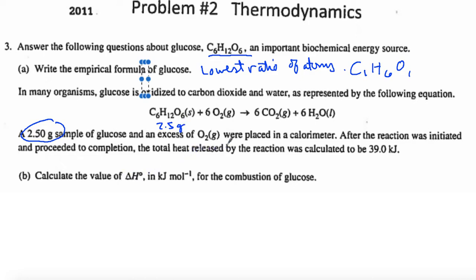It says a 2.5 gram sample of glucose in an excess of oxygen is placed in a calorimeter. Remember the calorimeter? It had a thermometer, and it had a lid, and it was insulated, and we could check the temperature before and after the reaction. After the reaction was initiated and proceeded to completion, the total heat released by the reaction was calculated to be 39.0 kilojoules.